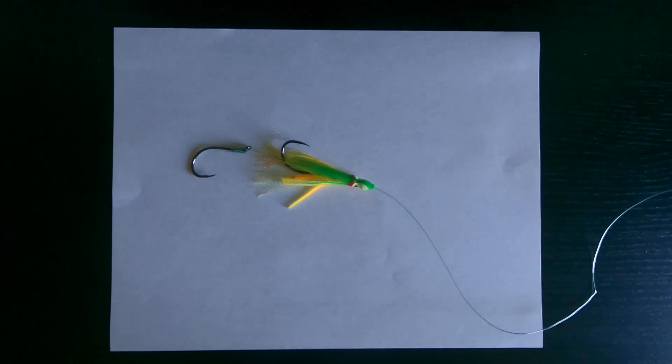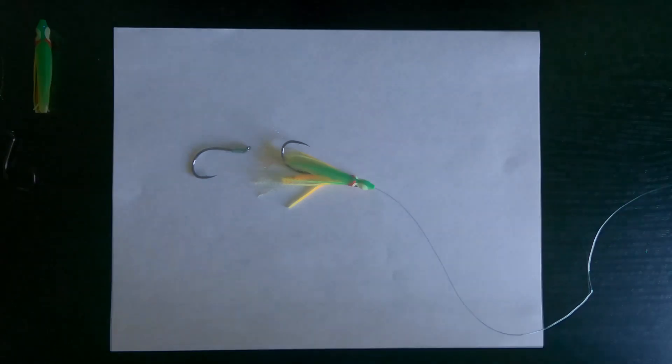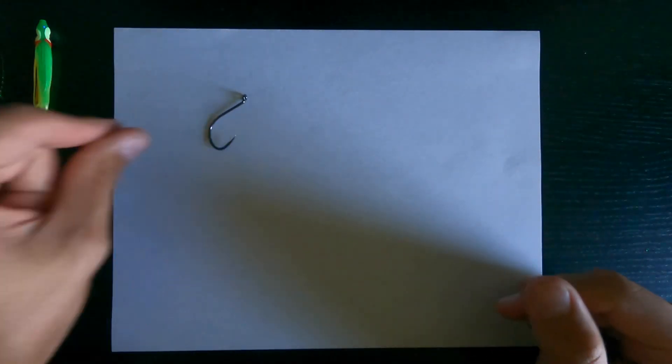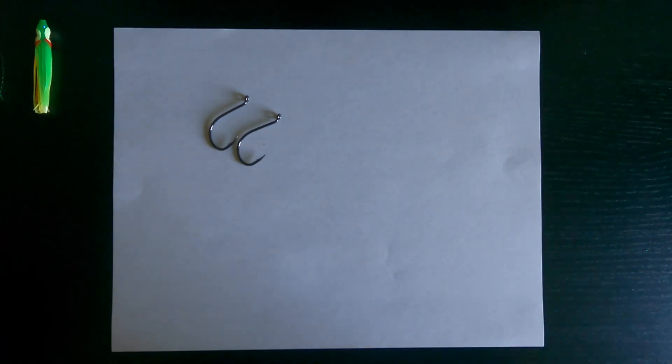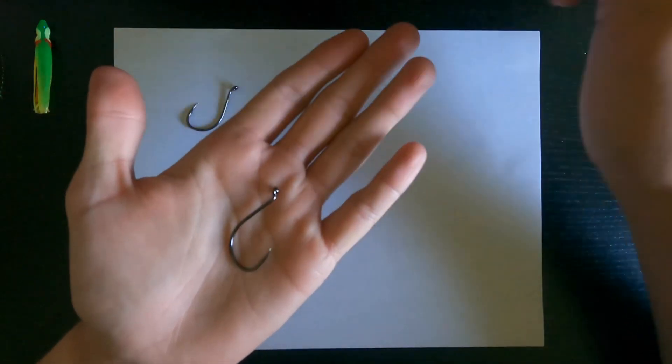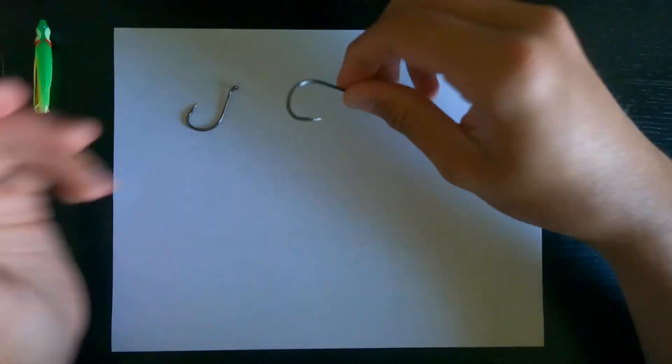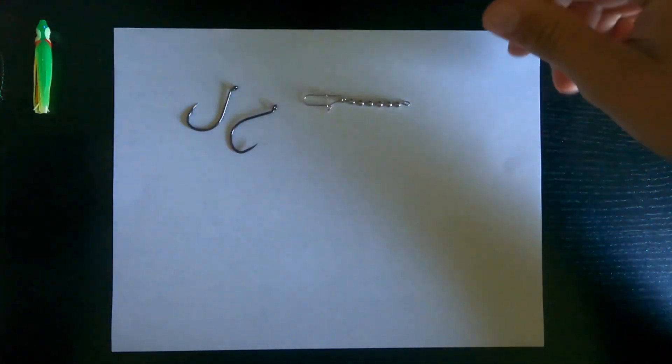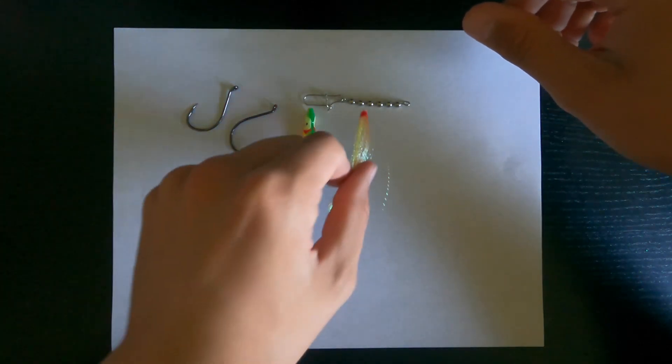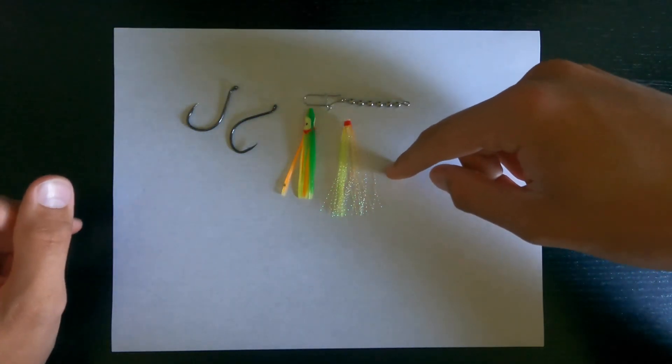If you guys enjoy the video make sure to leave a like and subscribe. Let's get into it. Alright guys, basically all you're going to need is two size hooks, whatever size you want. I'm going to be using size 5/0, these are Gamakatsu just normal bait hooks. And then you're going to need a swivel, I'm using a bead chain swivel. You got your hoochie and this is a P-Line tinsel skirt.